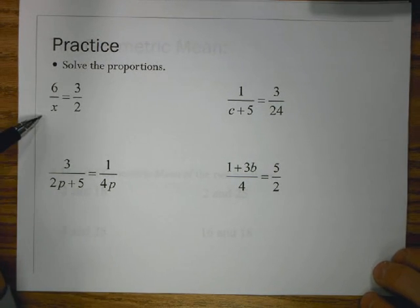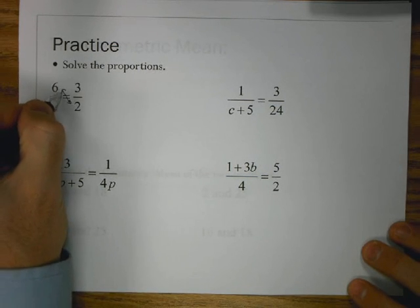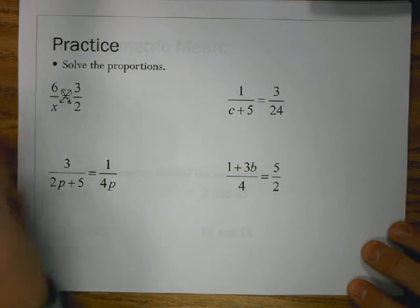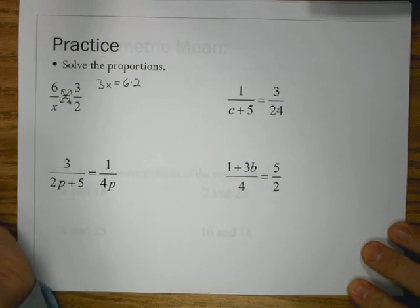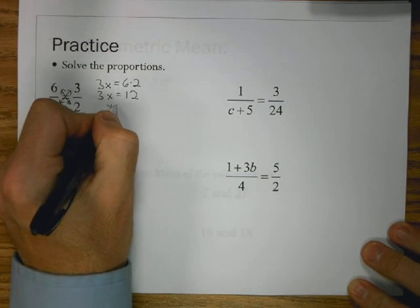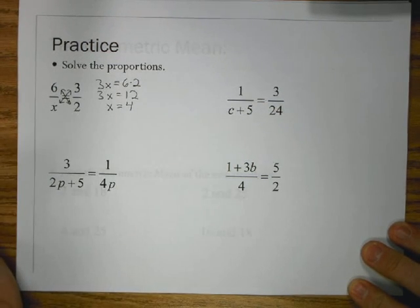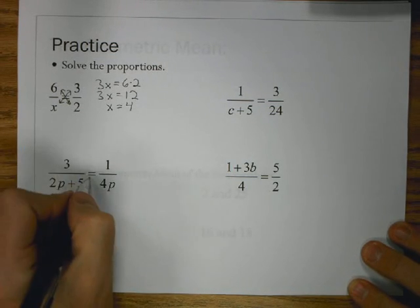So, let's look at some practice with some proportions. So, if I have 6 over X equals 3 over 2, this is where I know 3 values and I want to find the missing one. So, we can do cross product where I multiply the diagonals. So, I'd get 3X equals 6 times 2 or 3X equals 12 and X equals 4.